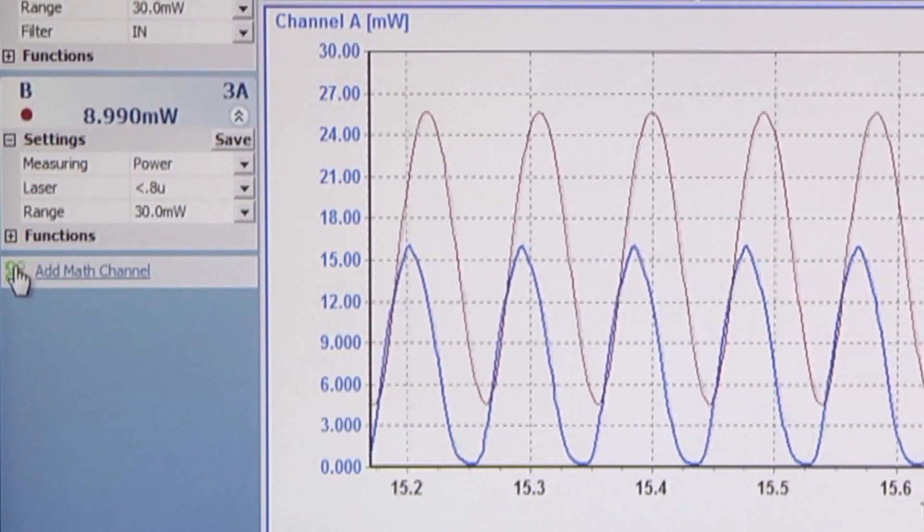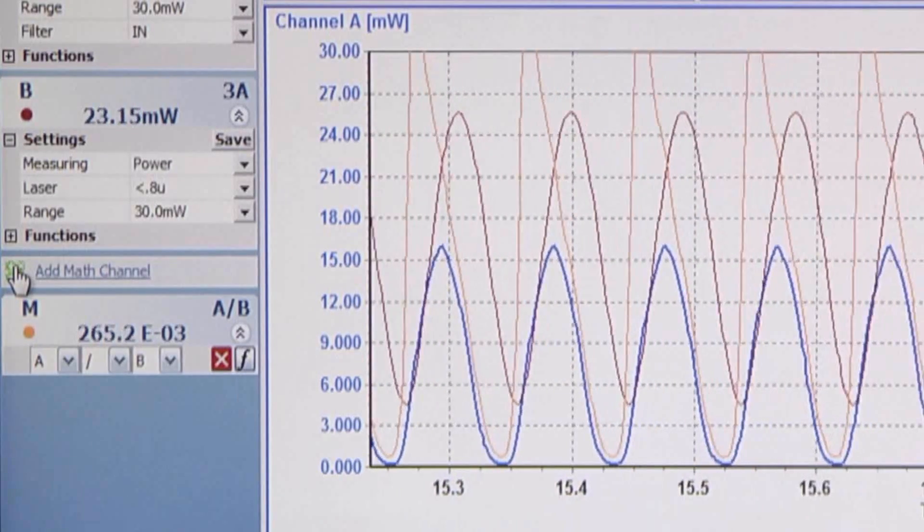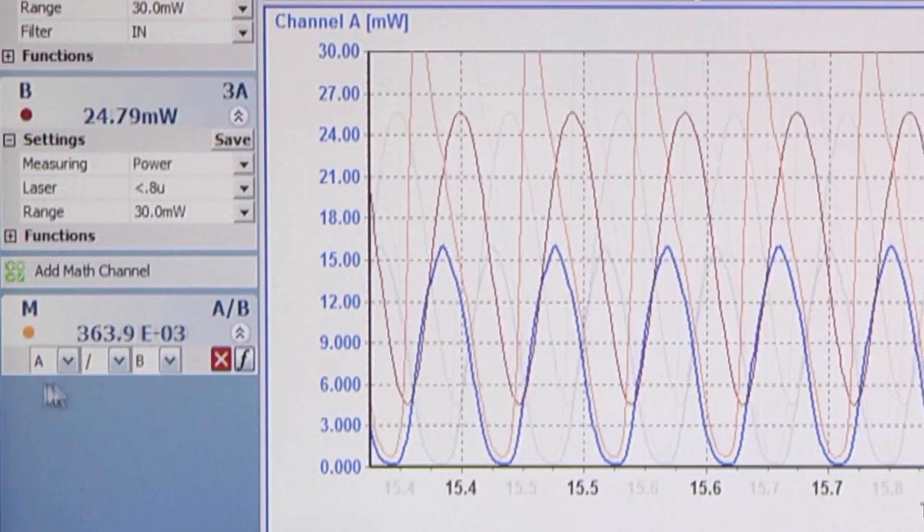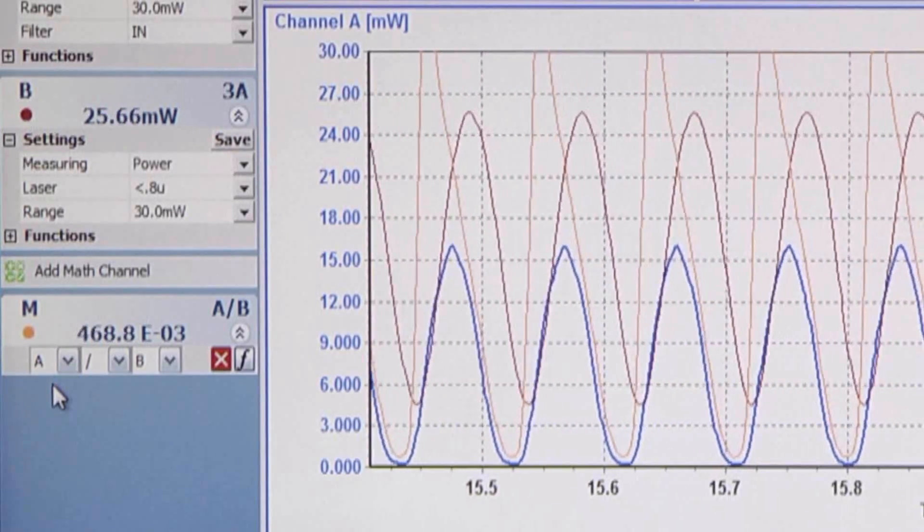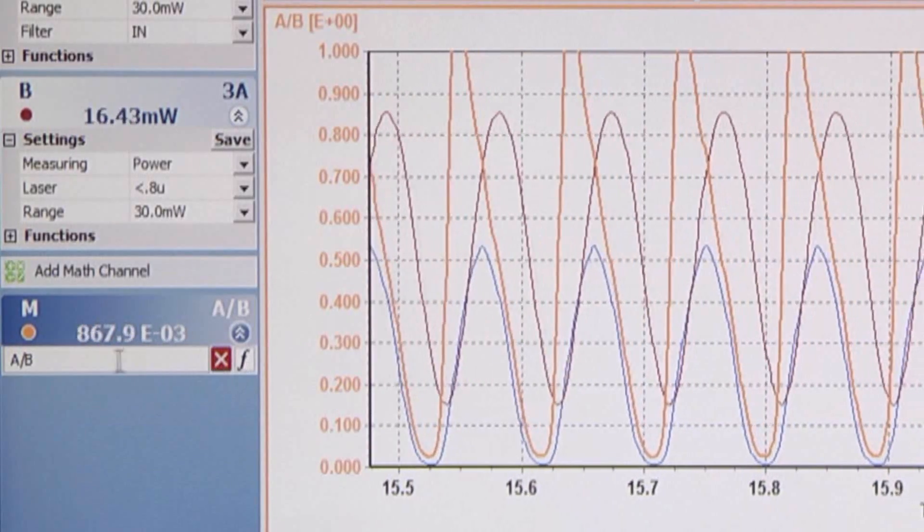Let's click the add math channel button to create a math channel and corresponding graph display. The default is A over B as shown. Let's define instead our own function. We click on the function icon and then define the function we want. We now have three active graphs.